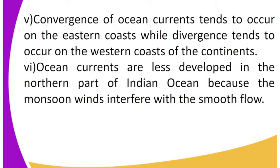Four, the warm ocean currents are found on the eastern coasts of continents. Five, convergence of ocean currents tends to occur on the eastern coasts while divergence tends to occur on the western coasts of continents. Six, ocean currents are less developed in the northern part of the Indian Ocean because the monsoon winds interfere with the smooth flow.